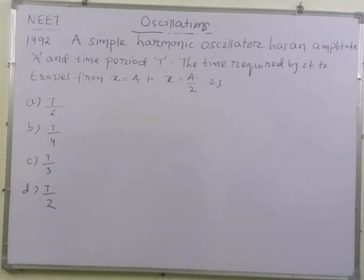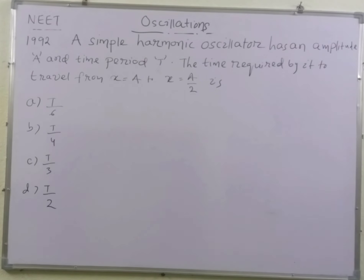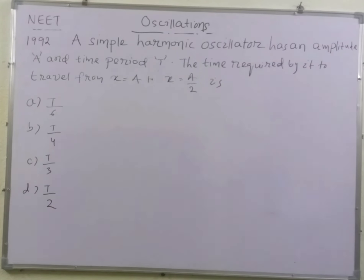Students, this question was asked in 1992 from the chapter oscillations. A simple harmonic oscillator has amplitude A and time period T. The time required by it to travel from X equal to A to X equal to A by 2.